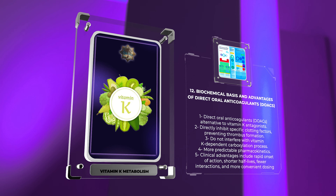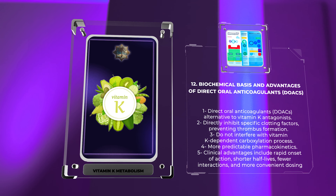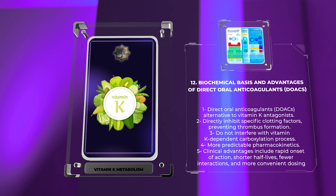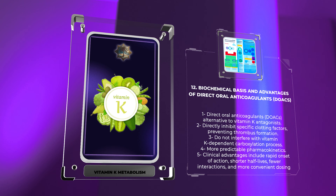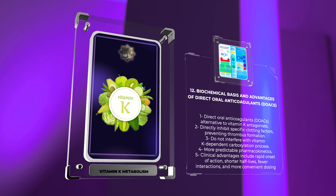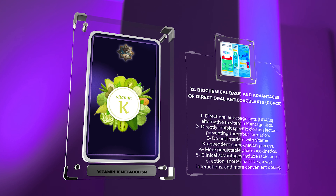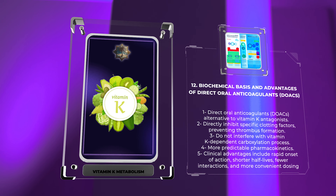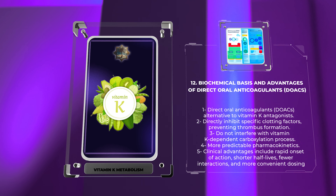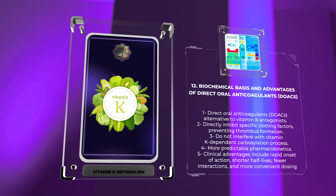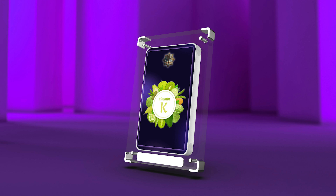The uptake and distribution of vitamin K in the body involve various transporters and binding proteins. The intestinal absorption of dietary vitamin K relies on fatty acid transporters and cholesterol transporters present in the enterocytes. Once absorbed, vitamin K is transported in the circulation predominantly bound to lipoproteins, primarily low-density lipoproteins (LDL) and very low-density lipoproteins (VLDL). Hepatic uptake and distribution of vitamin K involve membrane transporters and binding proteins. A comprehensive understanding of these transport mechanisms is crucial to elucidate the factors influencing vitamin K status and to devise strategies to optimize its utilization.